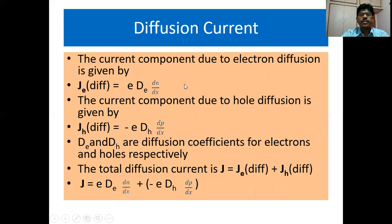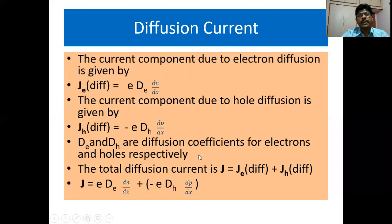The expressions for diffusion current: the current component due to electron diffusion is given by J_e(diffusion) = e·D_e·(dN/dx). The current component due to hole diffusion is given by J_h(diffusion) = −e·D_h·(dP/dx), where D_e and D_h are diffusion coefficients for electrons and holes respectively. The total diffusion current is J(diffusion) = e·D_e·(dN/dx) − e·D_h·(dP/dx).